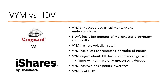VYM versus HDV: VYM's methodology is rudimentary and understandable — you could probably replicate it with enough time and data. HDV has Morningstar proprietary complexity we didn't fully dig into, so we don't fully understand how they're selecting those 75 stocks. VYM has less volatile growth, less concentration of portfolio names, about 110 basis points more growth, and two basis points lower fees. Going back to our point about transaction fees being a predictor of success — in our opinion, VYM beats HDV.